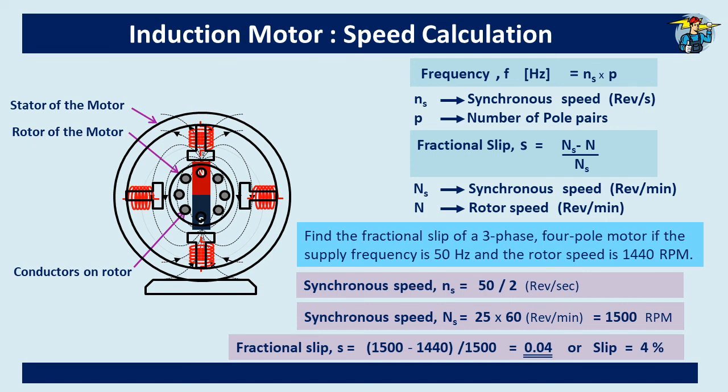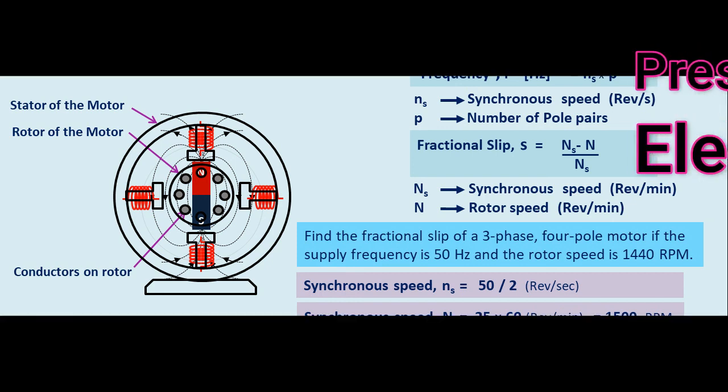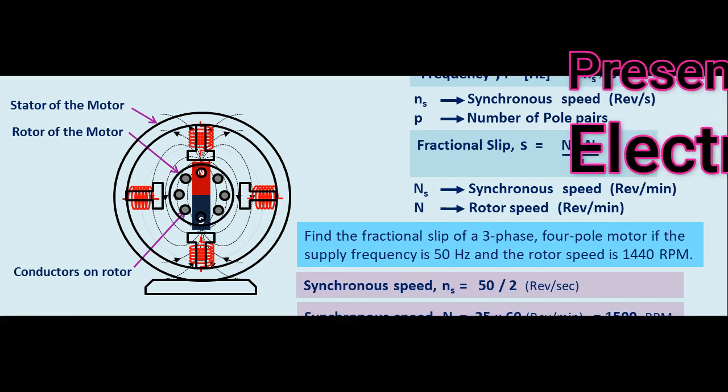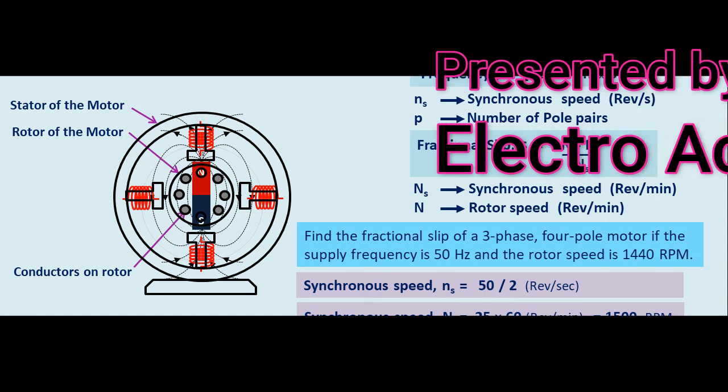Hope you now have a fair idea of how RPM changes when frequency and number of pole pairs are different in an induction motor.